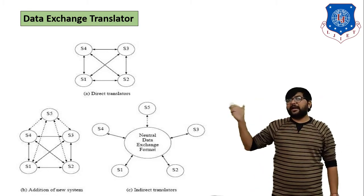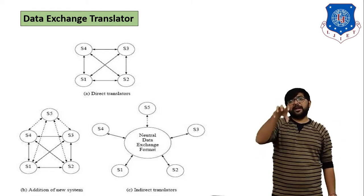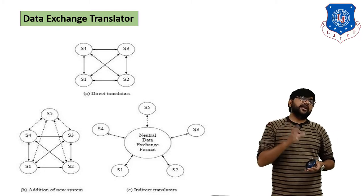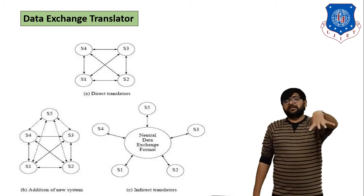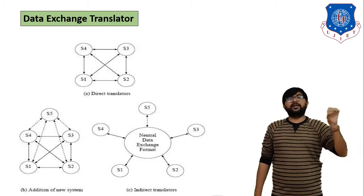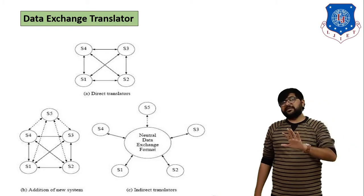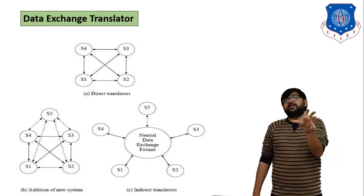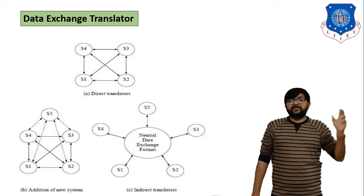The second part is Indirect Translator. In Indirect Data Exchange, there is one main system, and that main system is connected with the other five or six systems, as shown in figure C. To transfer data, you must first send the data to the main system, and then the main system forwards it to the target system. For example, to transfer from system 1 to system 3, you first transfer from system 1 to the main system, and then the main system transfers data to system 3. So in Indirect Data Exchange Translator there is one mediator, whereas in Direct Data Exchange Translator there is no mediator.